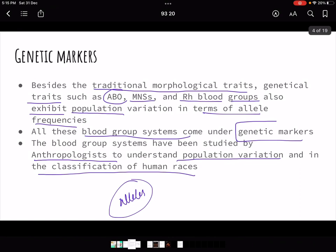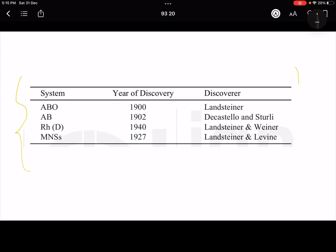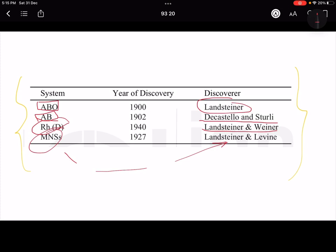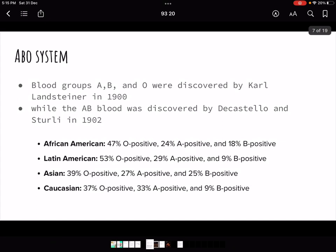Now we will understand in detail the kinds of genetic markers in blood that we are going to study. First is the ABO blood group system, given by Landsteiner, and AB was described by De Castello and Stirli. Then we have the Rh system, also given by Landsteiner and Wiener, and MNS given by Landsteiner and Levine. Today we are going to study the ABO system.